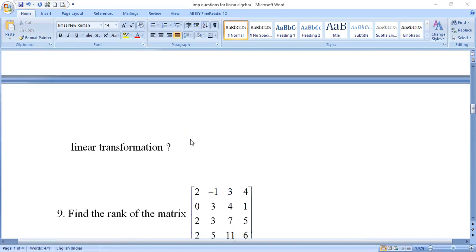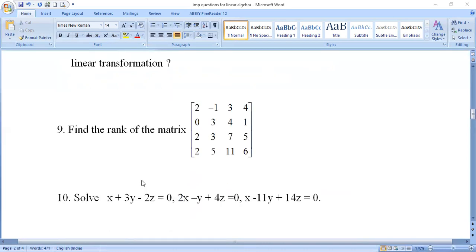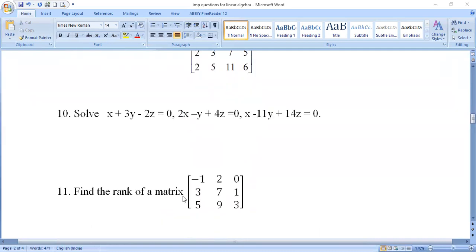Ninth question: Find the rank of a 4 by 4 matrix. Tenth question: Solve the system of equations x + 3y - 2z = 0, 2x - y + 4z = 0, x - 11y + 14z = 0. Eleventh question: Find the rank of the matrix [-1, 2, 0; 3, 7, 1; 5, 9, 3].